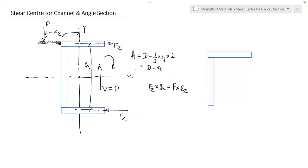So P times EZ equals FZ times H, giving us EZ equals FZ times H divided by P. This EZ is the position of the shear center on the Z axis. So the position of the shear center is somewhere here — if you apply a load through this point, then there will be no twisting in the channel section.